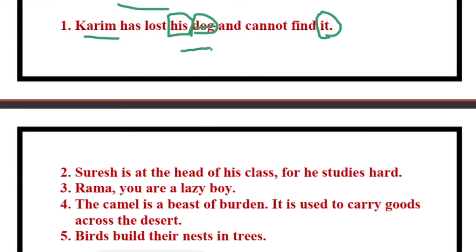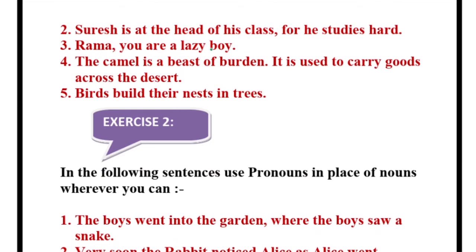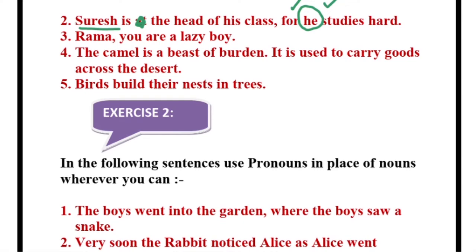Let's move to sentence number two: 'Suresh is at the head of his class, for he studies hard.' Suresh is the noun. The word used instead of Suresh is 'he' — this word is used instead of repeating Suresh again. We could have written 'Suresh studies hard,' but instead of repeating Suresh, we write 'he.' That is why 'he' is a personal pronoun.